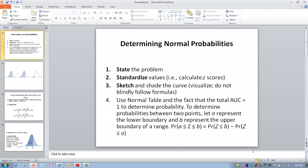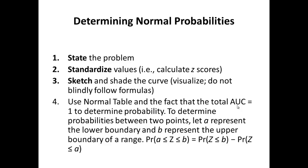When dealing with Z-score problems and determining normal probabilities, we want to use a four-step approach to figure out the probabilities associated with certain Z-scores. First, we want to state the problem — we want to indicate what it is we're trying to determine. Are we trying to find the probability for a single Z-score, the probabilities above or below a certain Z-score, or the percent of scores that fall between a certain boundary of two Z-scores?